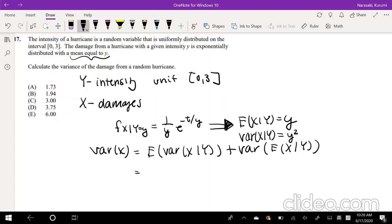Given this, we can actually just rewrite this, right? Because we know that the variance of x given y is just equal to y squared. And we also know that expectation x given y is just equal to y. So given that, we can actually write it out: expectation of y squared plus variance of y.